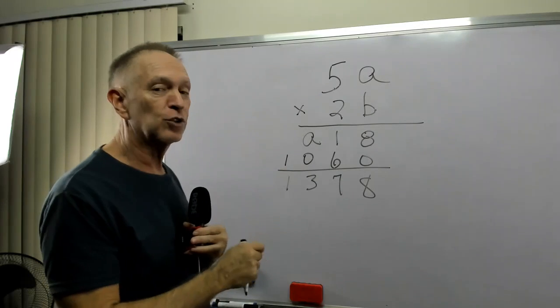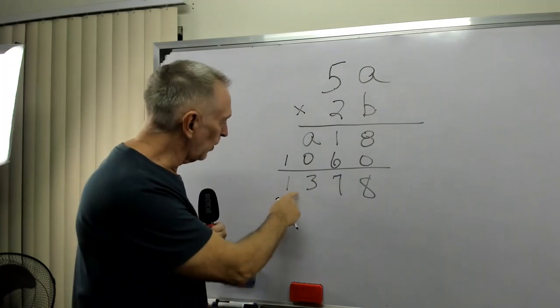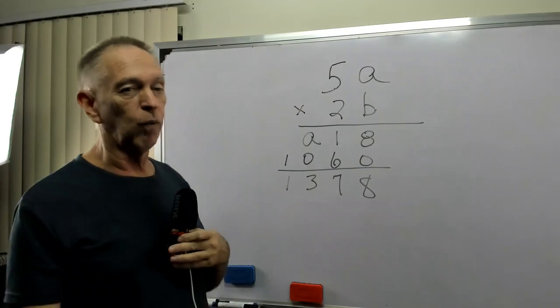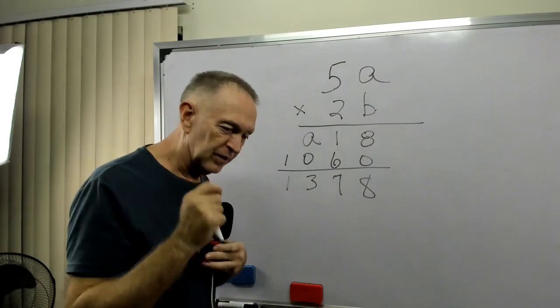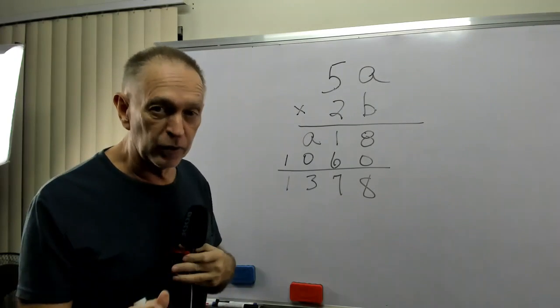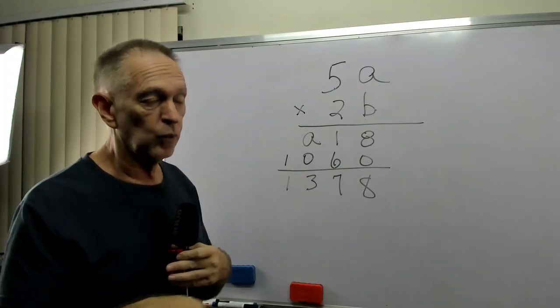5A times 2B equals 1,378. Whoa! Well, just like we've been doing, how did we solve the other ones? We just begin.